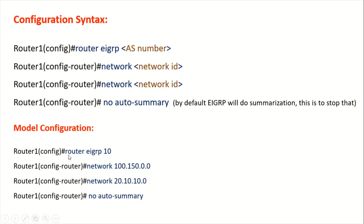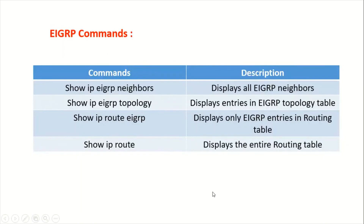In the model configuration, 'router eigrp 10' specifies autonomous system 10, directly connected networks are advertised, and 'no auto-summary' is included. Commonly used EIGRP verification commands include: 'show ip eigrp neighbors' to display all EIGRP neighbors, 'show ip eigrp topology' to display the topology table, 'show ip route eigrp' to find the best route, and 'show ip route' to display the full routing table.